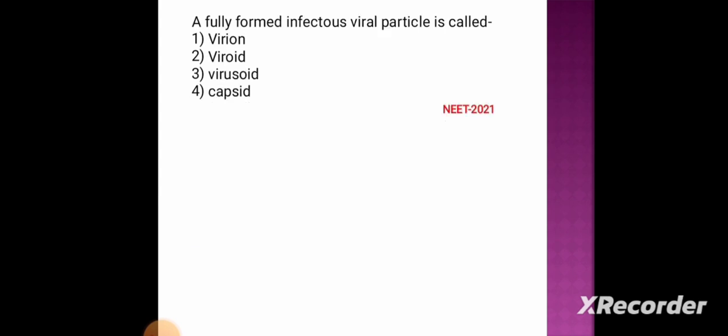Next question: a fully formed infectious viral particle is called — option 1: virion, option 2: viroid, option 3: virusoid, option 4: capsid.